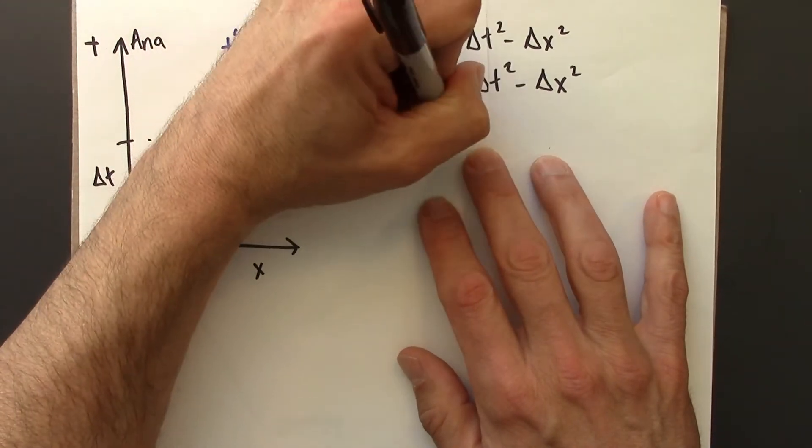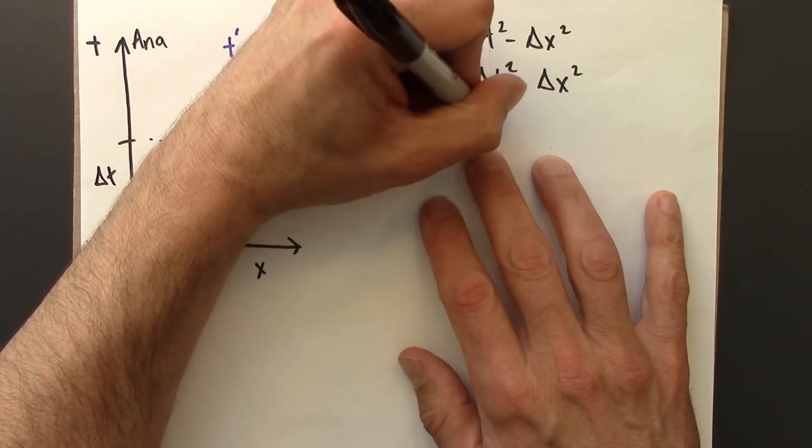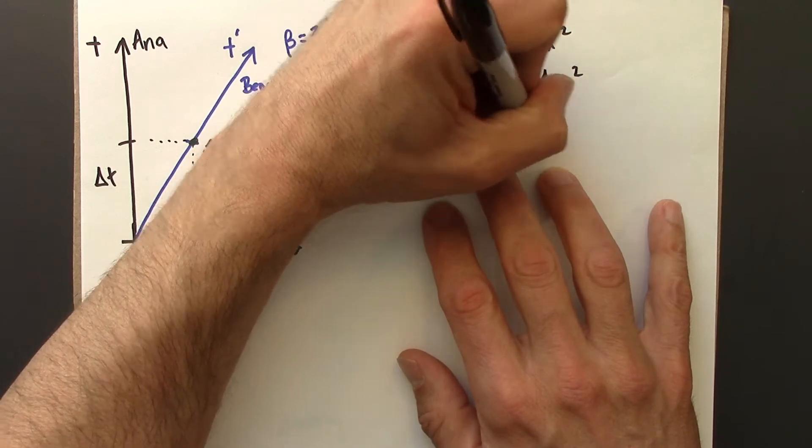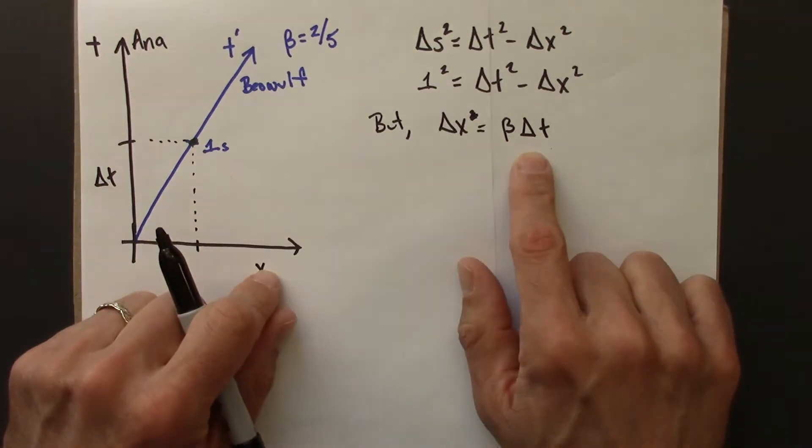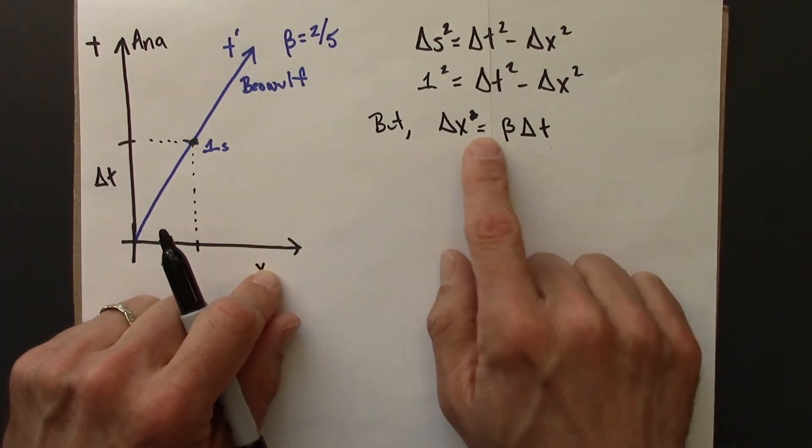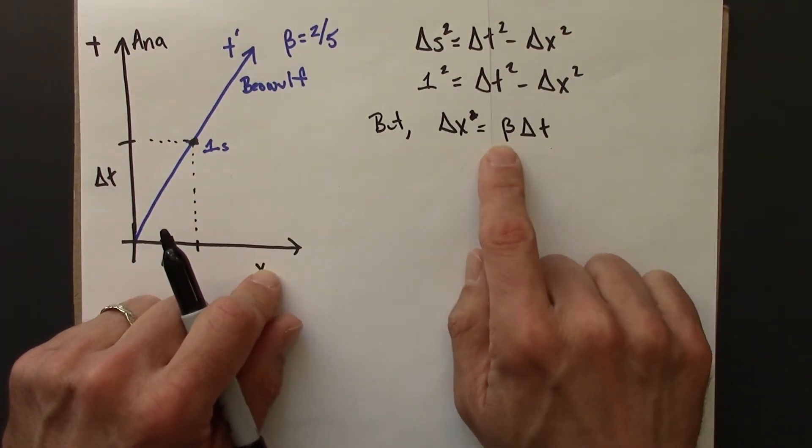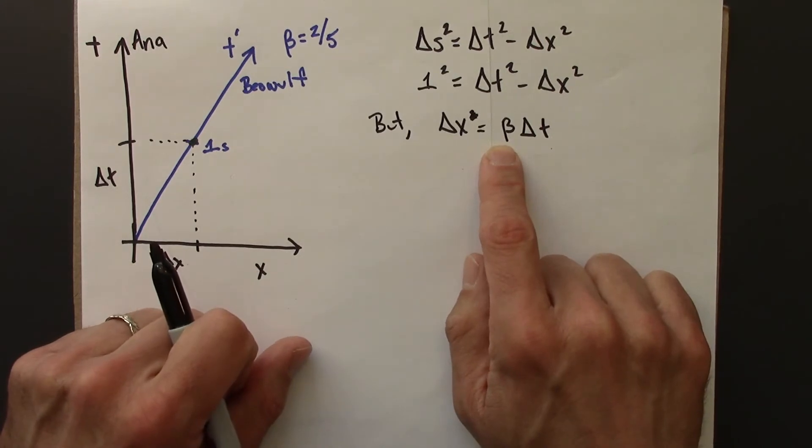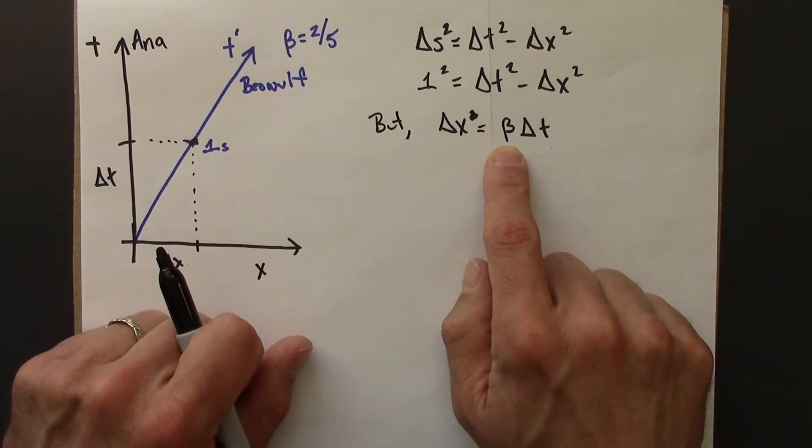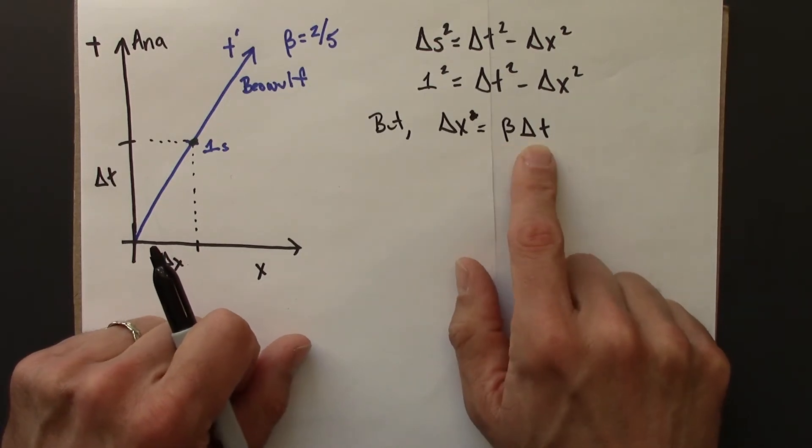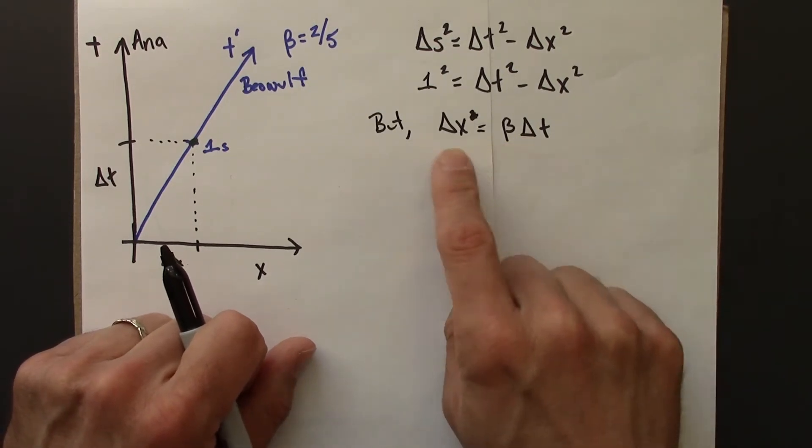But, delta x squared is beta delta t. Sorry, it shouldn't be a square there. Delta x is beta delta t. Distance equals rate times time. Beta is how fast Beowulf is going, including his clock. How far does the clock go in a time interval delta t? Speed times time gives you distance.